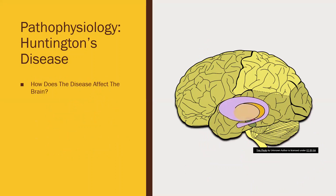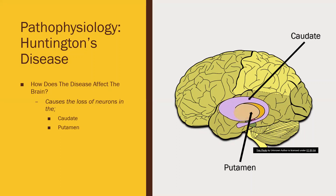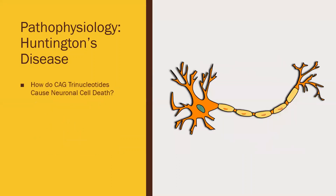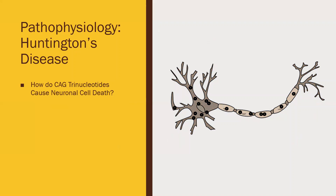HD causes the loss of neurons in the caudate and the putamen of the basal ganglia, which causes the atrophy or shrinking of the striatum and enlargement in the anterior horns of the lateral ventricles. The current reasoning for neuronal death in the striatum is the increased number of mutated protein groups within the neuronal cells, causing excessive firing of the neuron leading to high levels of intracellular calcium, which leads to neuronal cell death.